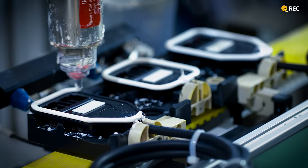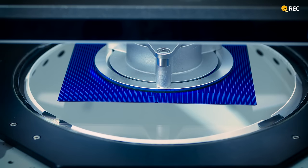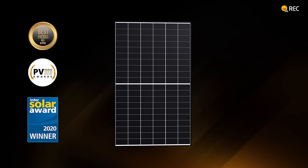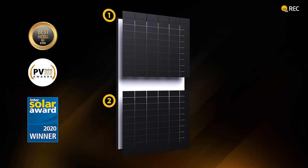Even with such high automation, REC still conducts numerous quality checks at every stage of the production line. The cells are laid out in REC's iconic twin design. This award-winning innovation reduces resistance and temperature while increasing power and efficiency.